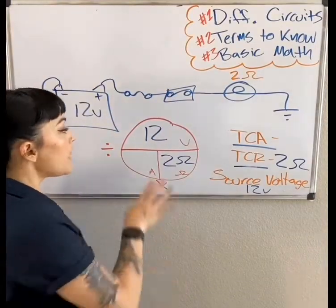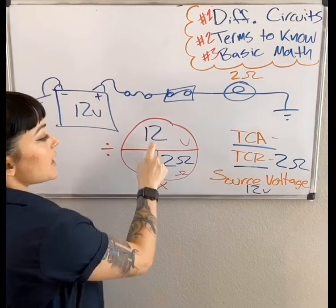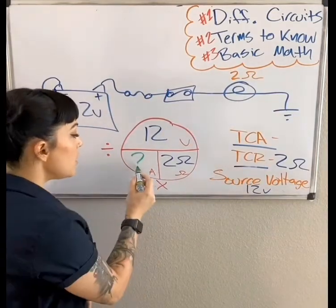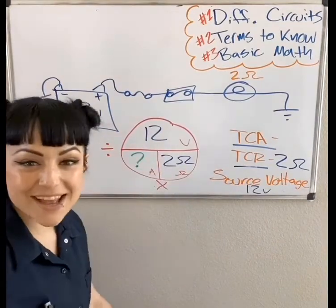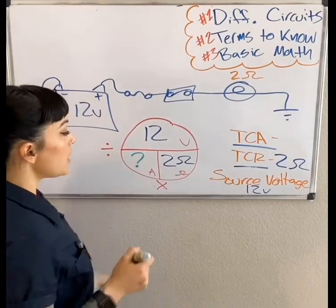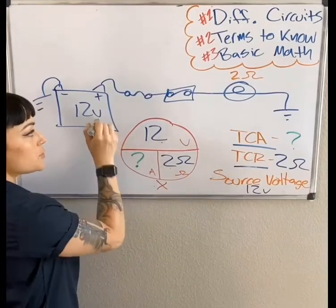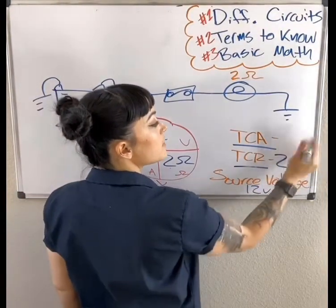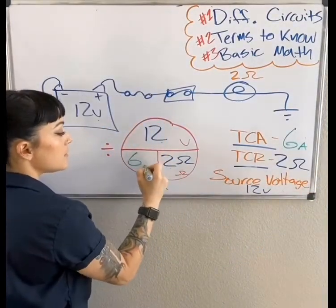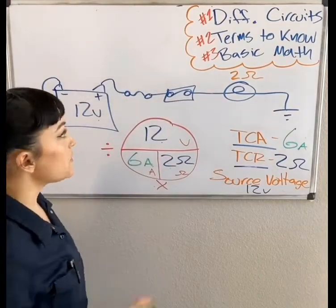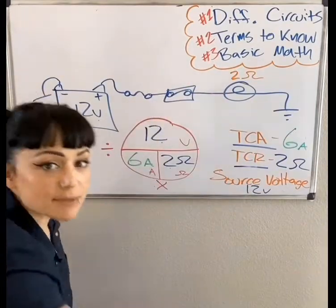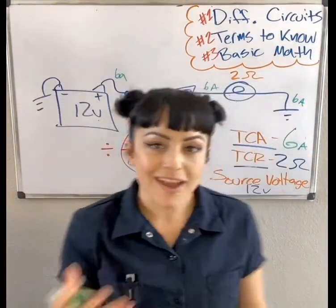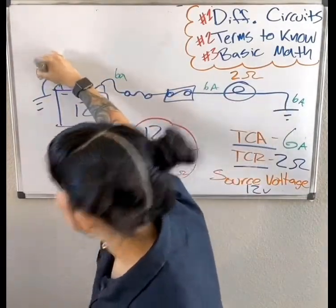Looking at the Ohm's law pie chart, we take 12 and divide it by 2. We're looking for TCA, so 12 divided by 2 ohms gives us 6 amps in this circuit. As long as we have continuity, that means we've got 6 amps flowing from beginning to end — 6 amps here, 6 amps here, 6 amps all the way back to the battery. Whatever is coming out must come back in.